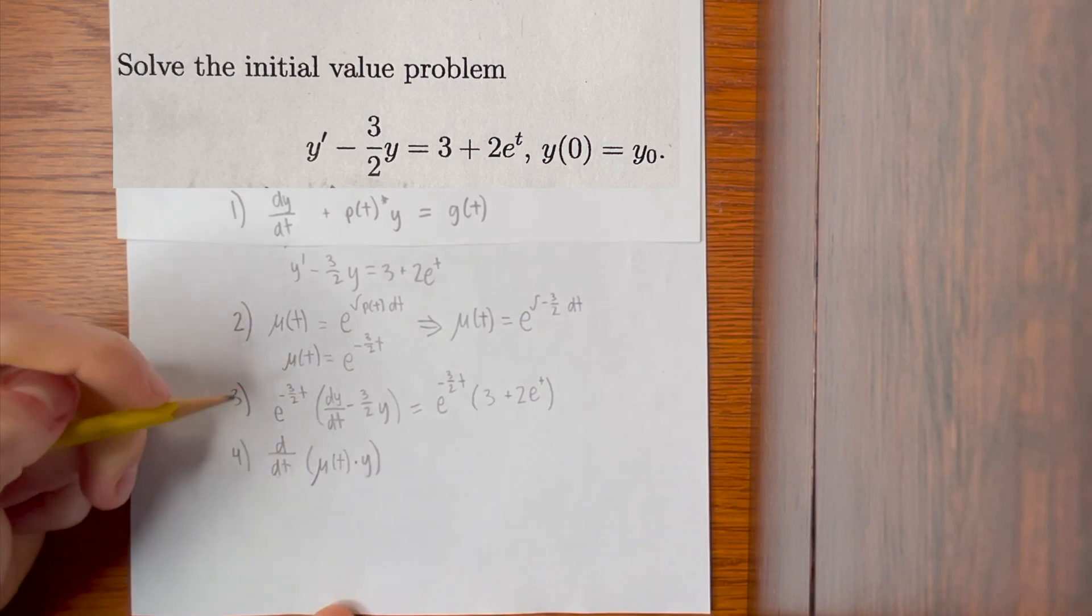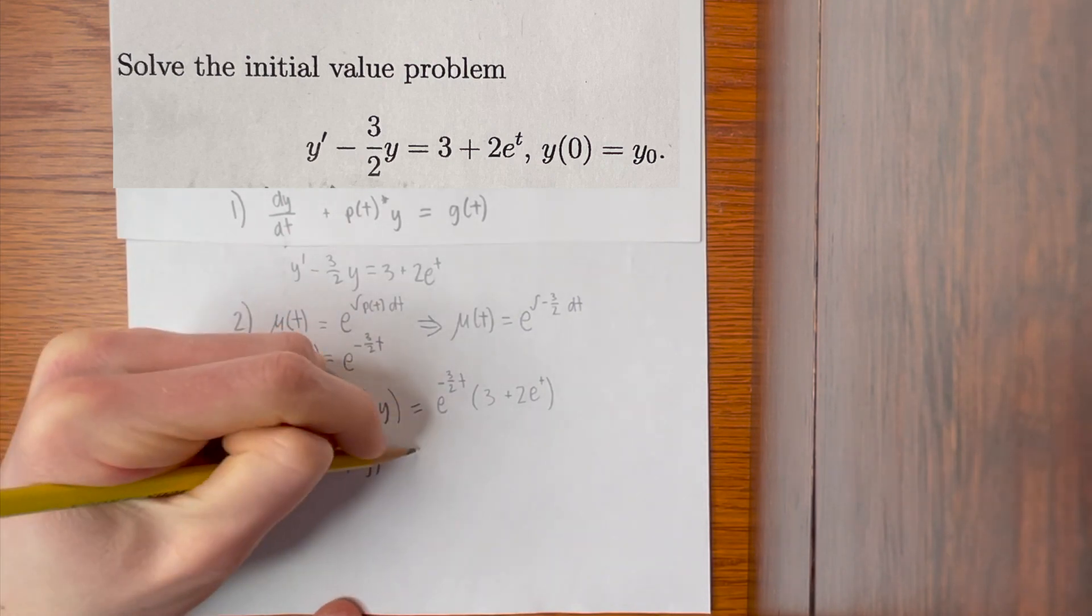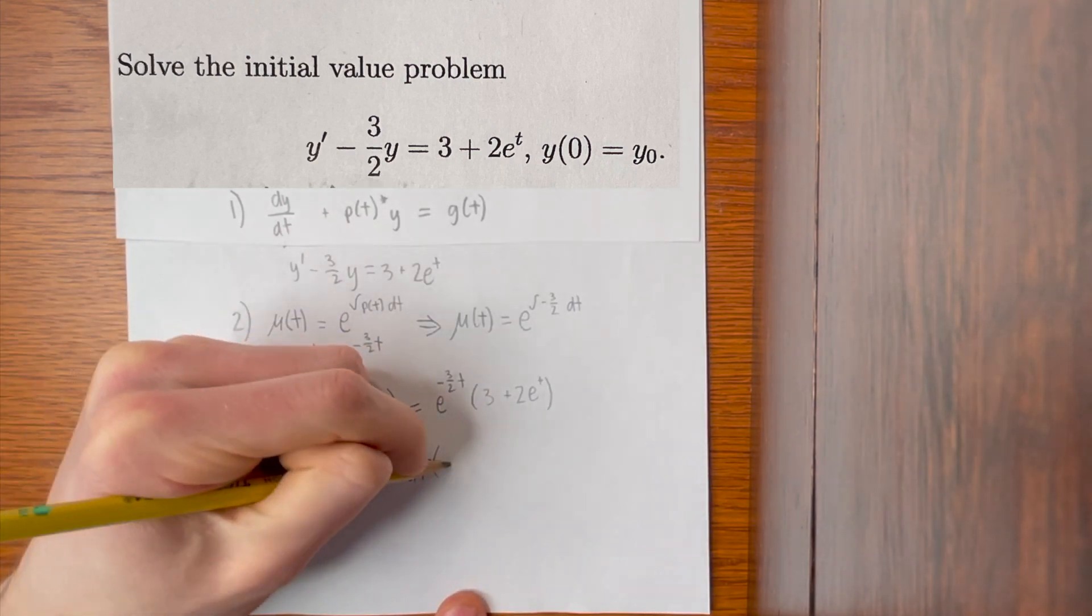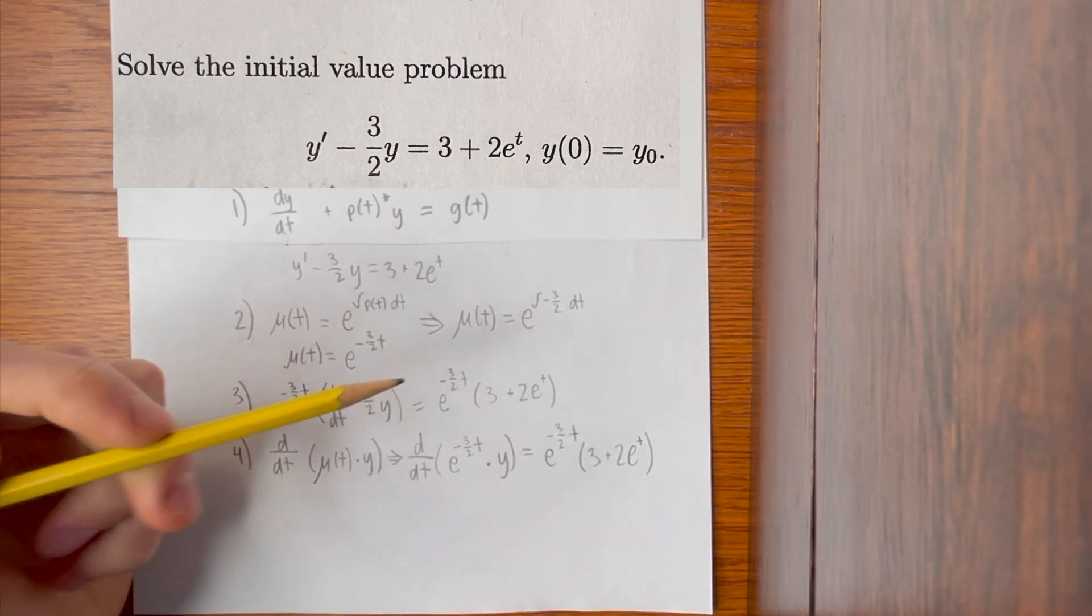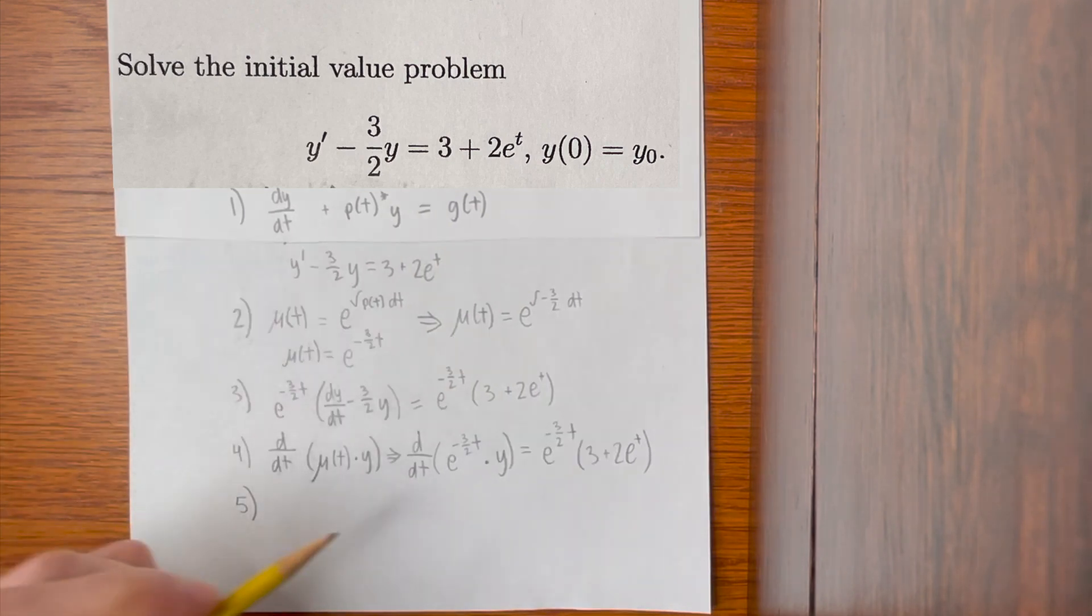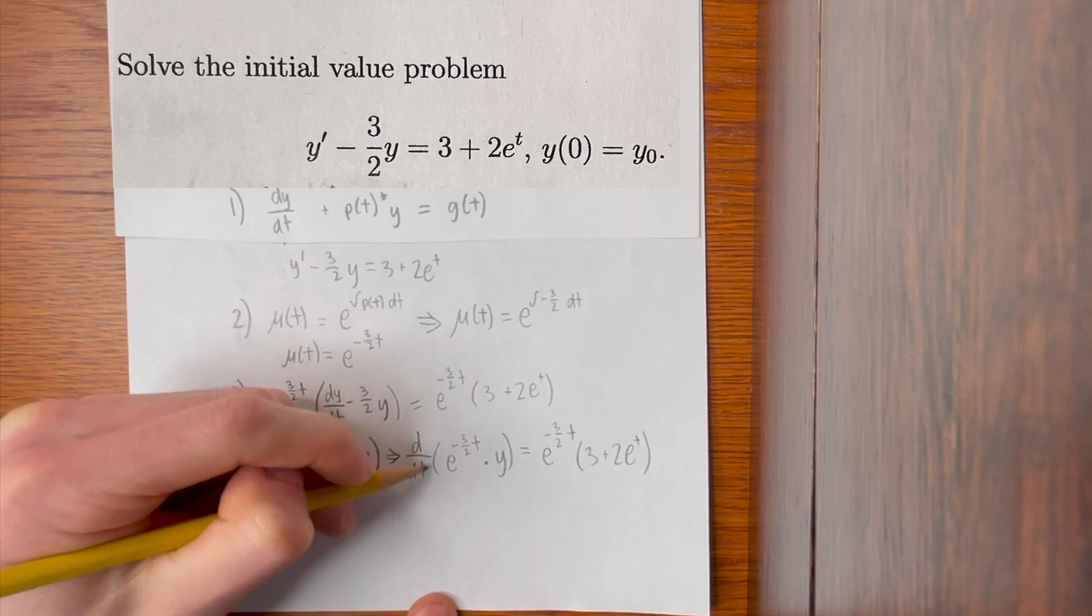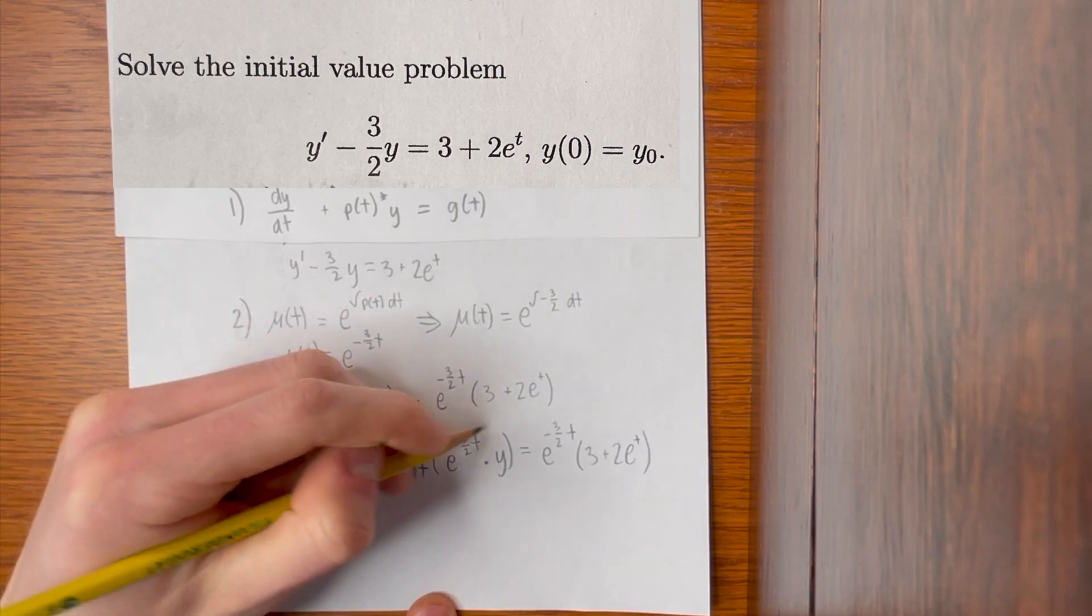So in this case, it becomes d/dt times e^(-3/2 t) times y. And we set that equal to what it was in step three. Now we integrate with respect to t on both sides. So this part just simply becomes what's inside.